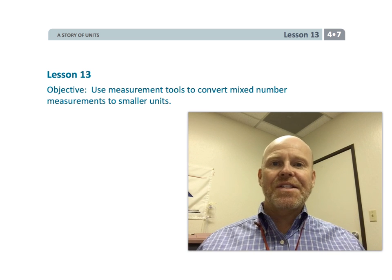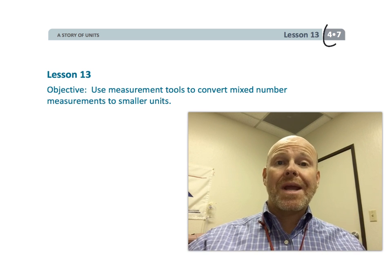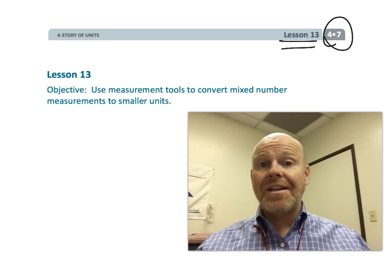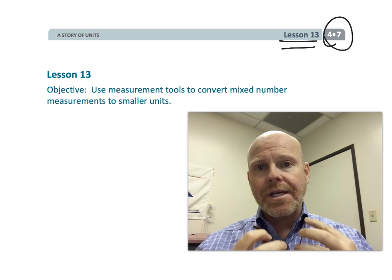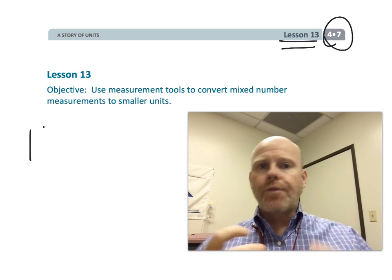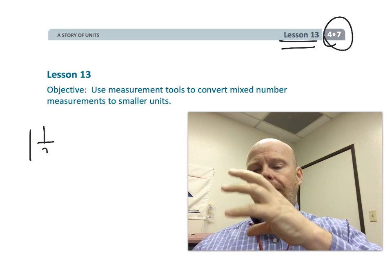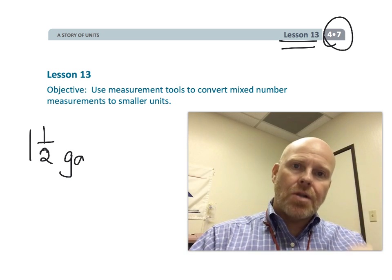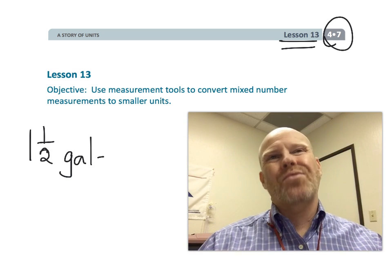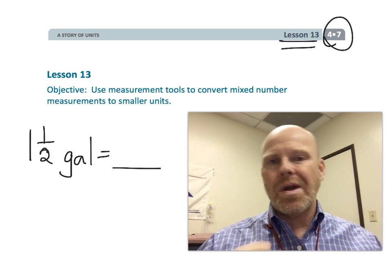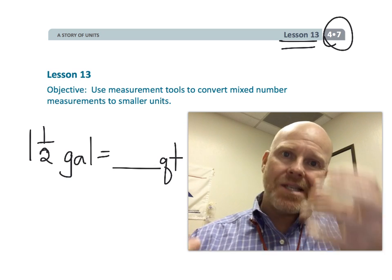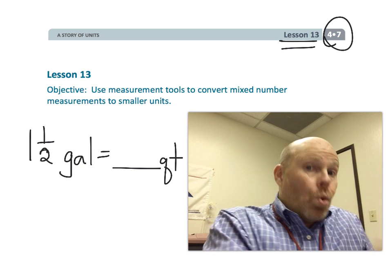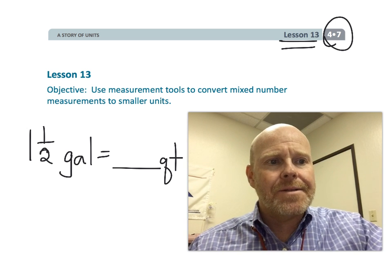All right, this is fourth grade, module 7, lesson 13, and in this lesson we're going to continue converting measurements into smaller units. For example, one and a half gallons is equal to how many quarts. So let's get started.